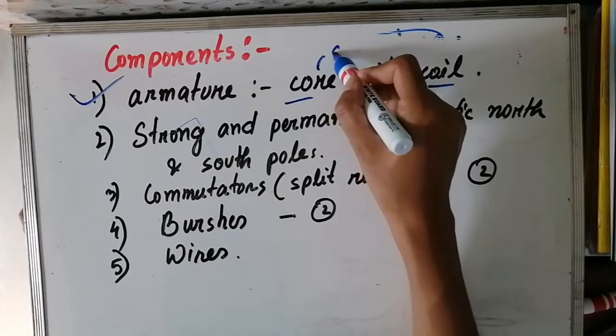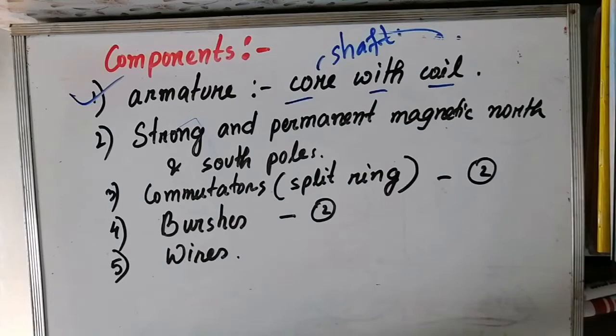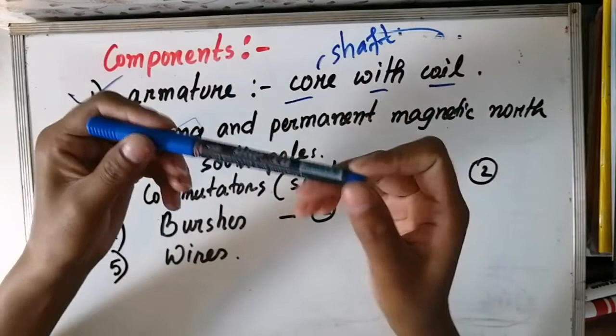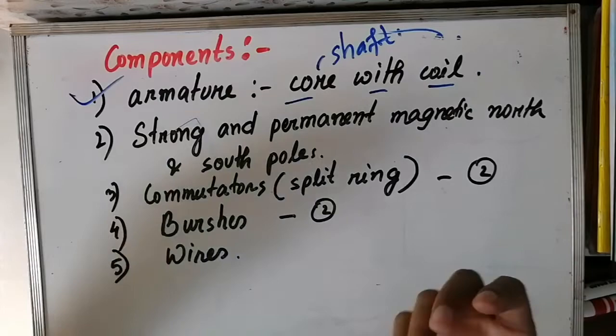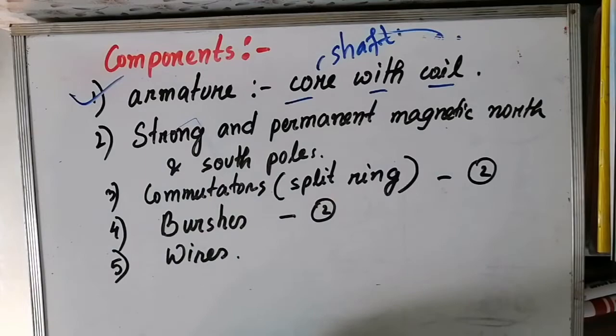Coil means soft iron rod core. It consists of a soft iron core inside the coil.